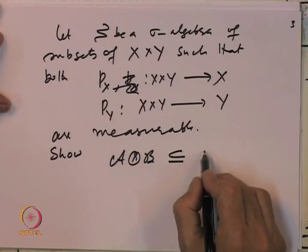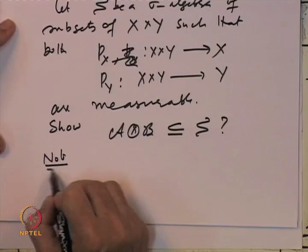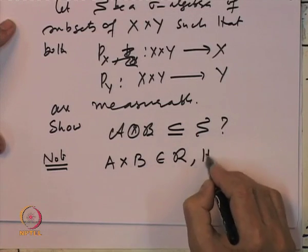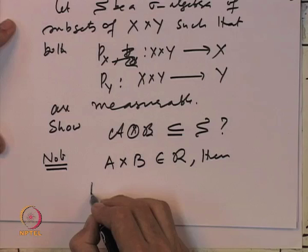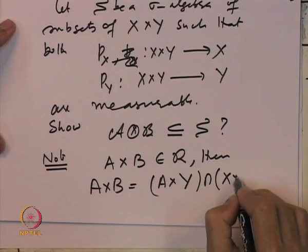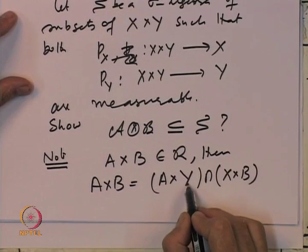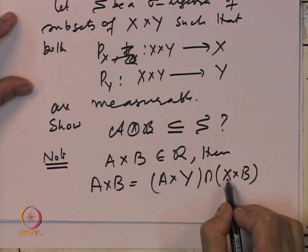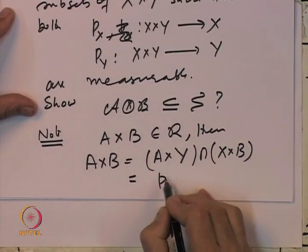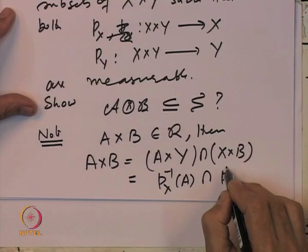To prove that A⊗B is the smallest such sigma algebra, let S be any sigma algebra with respect to which both PX and PY are measurable — we want to show A⊗B ⊆ S. Note that if you take a rectangle A×B, it can be written as (A×Y) ∩ (X×B), since the first component gives A and the second gives Y∩B = B.